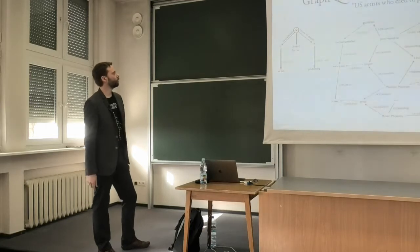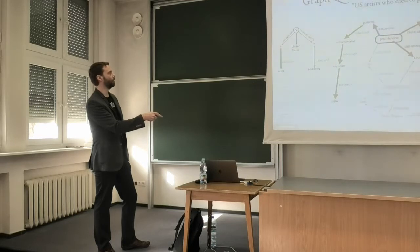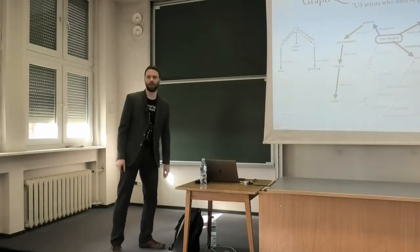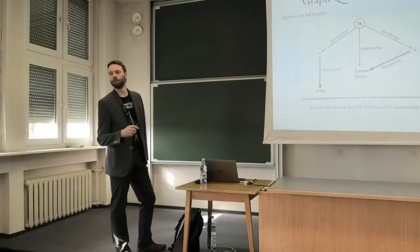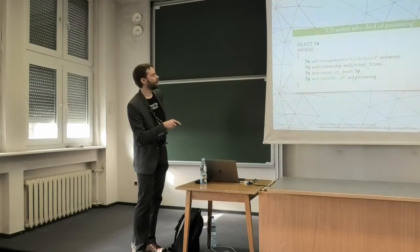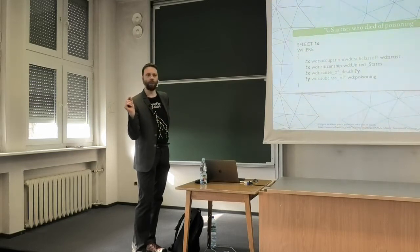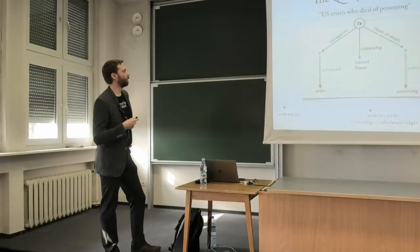If I have this query and I have my graph as before, the query actually works. It finds Jimi Hendrix, whose occupation is guitarist — there is a path to artist — cause of death is some type of overdose which has a path to poisoning, and we have United States citizenship. The double line means a 'subclass of star' expression in SPARQL, which means you can match against paths of length zero or more where all edges are labeled with 'subclass of'.